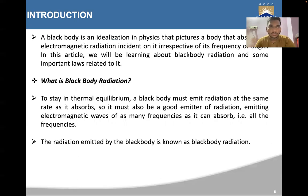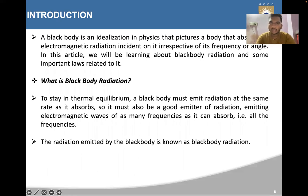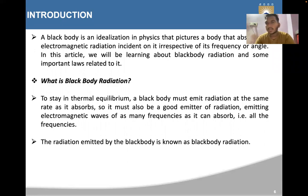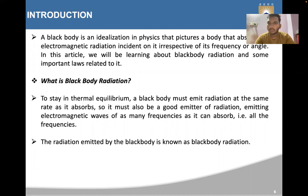A black body is an idealization in physics that pictures a body that absorbs all electromagnetic radiation incident on it, irrespective of its frequency or angle. To stay in thermal equilibrium, a black body must emit radiation at the same rate as it absorbs. It must therefore be a good emitter of radiation, emitting electromagnetic waves of as many frequencies as it can absorb — that is, all frequencies.